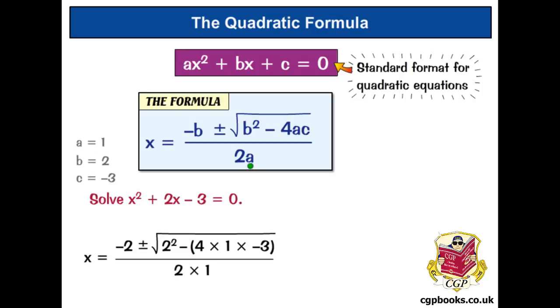Lots of people seem to put an a instead of 2a, so don't forget, it's all over 2a. Don't be one of those silly people. OK, now what does this square root sign give us? There's 2 squared, which is 4. And then inside this bracket, we've got 4 times 1, which is 4, times minus 3, so that's minus 12. So, we've got minus minus 12.